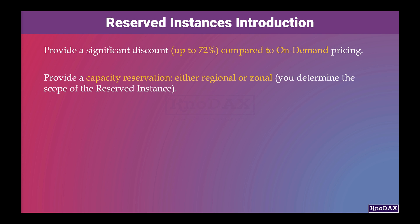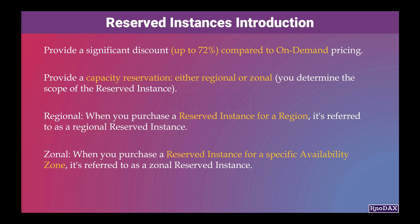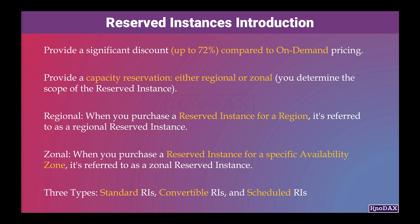The scope is regional when you purchase a reserved instance for a region — it's referred to as a regional reserved instance. The scope is zonal when you purchase a reserved instance for a specific Availability Zone — it's referred to as a zonal reserved instance. There are three types of reserved instances: standard reserved instances, convertible reserved instances, and scheduled reserved instances. Let's start with standard reserved instances.